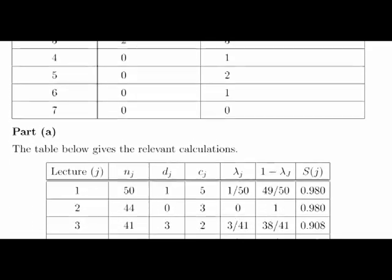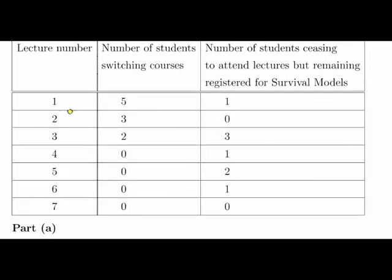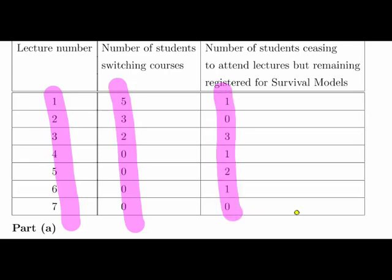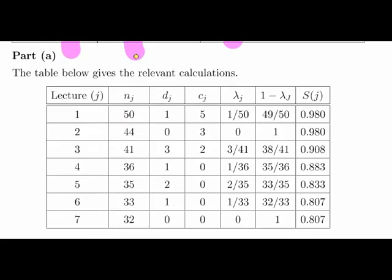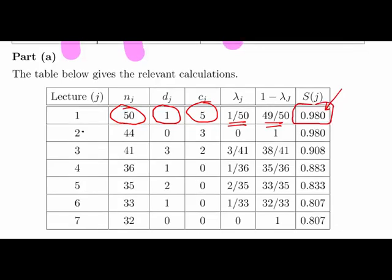Here's all the information again. I just started to start off with this. So here's our first seven lectures. Here's the students who are switching out. And these are the students who stop attending. What I'm going to do here is just rework that here. We start off with 50 students. We have one dropping out and five censoring. Five switching out. Essentially we have one student who drops out, out of the 50. That means 49 out of the 50 stay to the end. So our survival function here is 0.980.